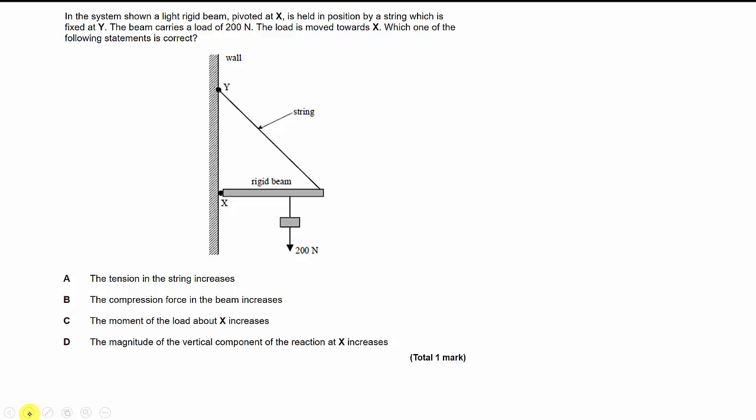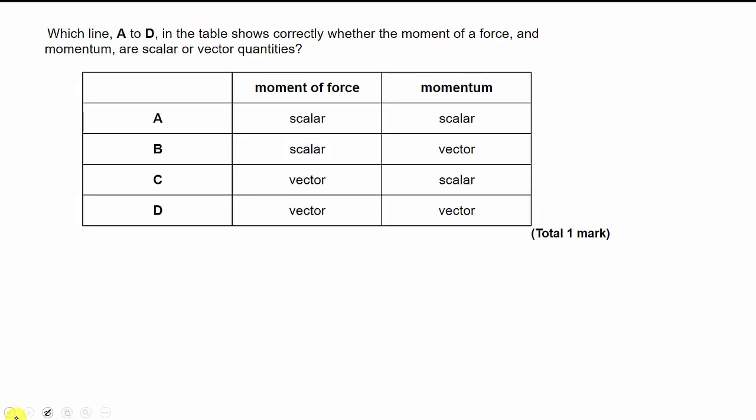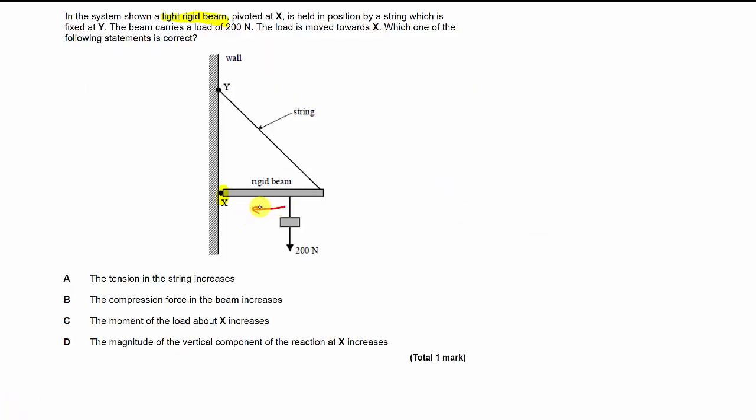Pause the video, have an attempt at the question. In the system shown, a light rigid beam, so basically what that means is, assume the beam has no mass. It's pivoted at X, so it's pivoted here. We're considering the pivot here. It's held in position by a string, which is fixed at Y. The beam carries a load of 200 newtons. The load is moved towards X. So we're going that way. We move towards X, moving it this way. Which of the following statements is correct?